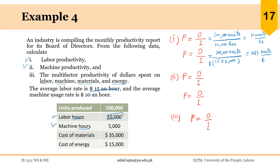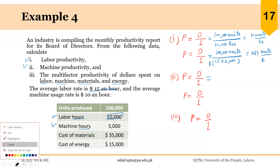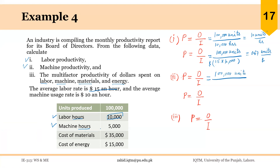Machine productivity can be calculated in the same way. The output is 100,000 units and the input is 5,000 machine hours. So the productivity will be 20 units per machine hour.